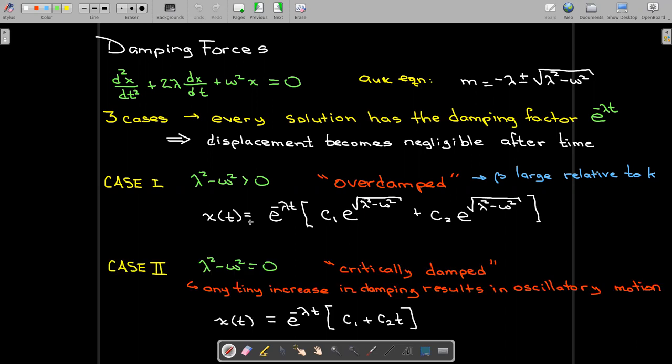In case 2, we have 0 under the radical sign. And so we just have an exponential with a negative exponent multiplied by a constant plus a constant times t. So some linear function. So it's almost impossible to have a critically damped system in reality. What it says is that any tiny increase in damping will result in oscillatory motion. And so it may have a critically damped behavior for a very short period of time, but it will eventually start to oscillate.